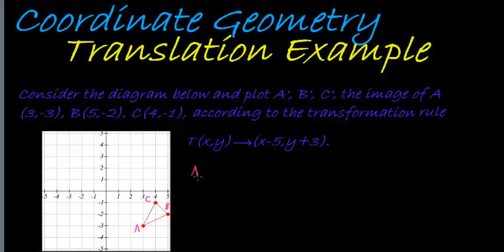So A accent would be A, which is 3 minus 5, which gives me -2, and y, which is -3 plus 3, which would be 0. So this is A accent.